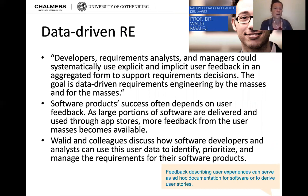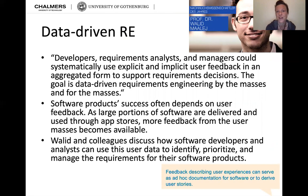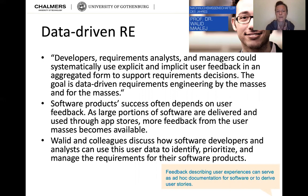Walid Maalej is a former colleague of mine from Technical University of Munich. In 2014 he was nominated as Nachwuchswissenschaftler — meaning junior researcher — in Germany. He works and researches in requirements engineering, a lot of it in data-driven requirements engineering. He argues in his article that developers, requirements analysts, and managers could systematically use explicit and implicit user feedback in aggregated form to support requirements decisions.